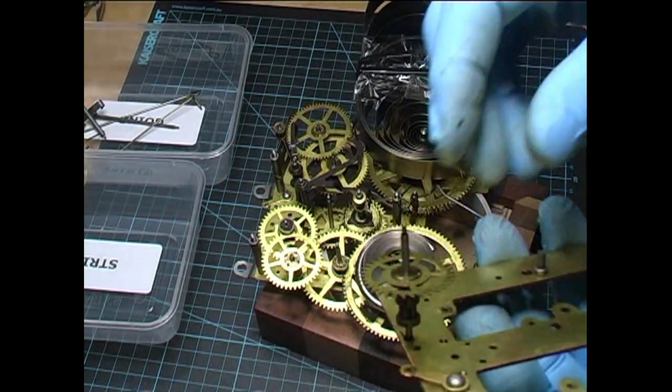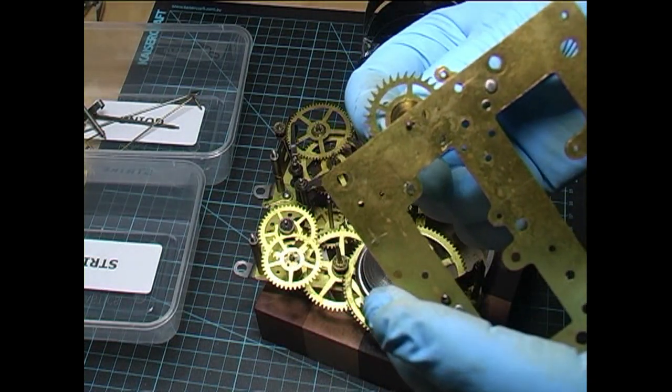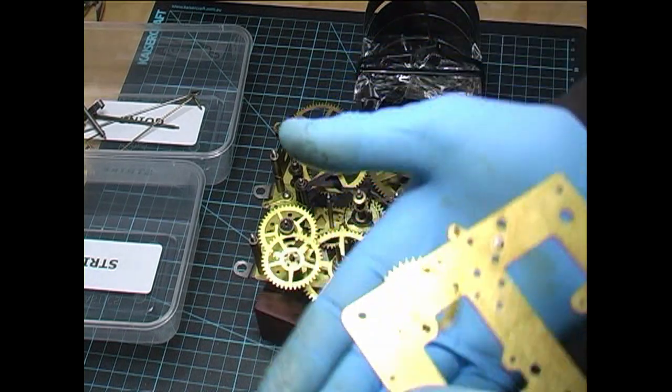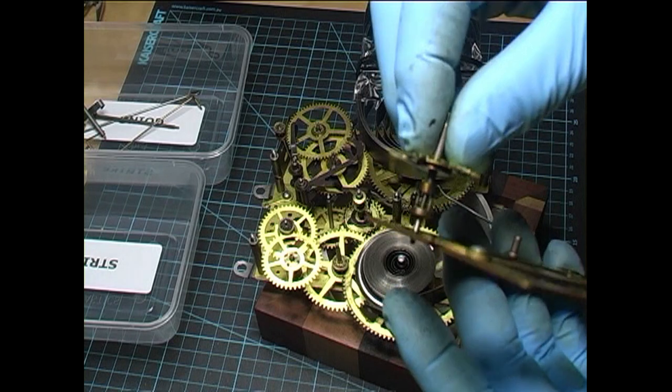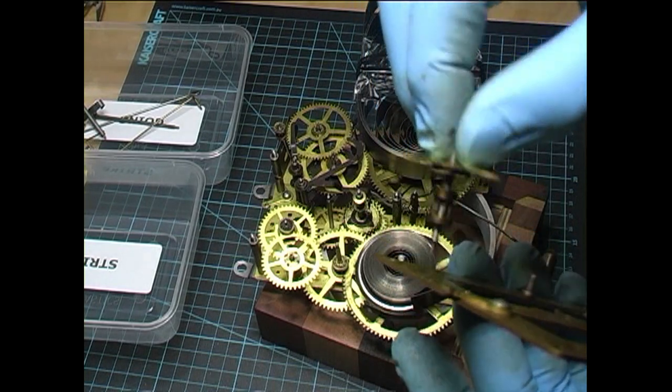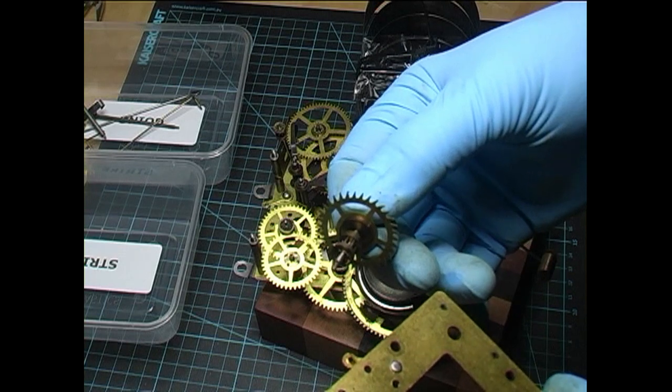We have removed it and that's our mechanism there. The escape wheel is still stuck in the plate. Look at the gunk on that. Won't even fall out. That is the amount of rubbish that's stuck in there. They need a serious clean.